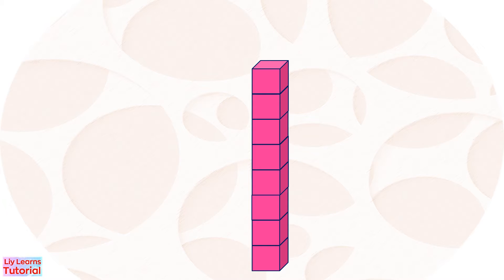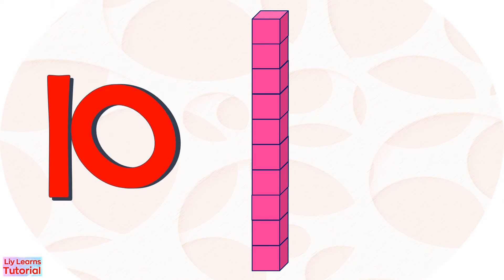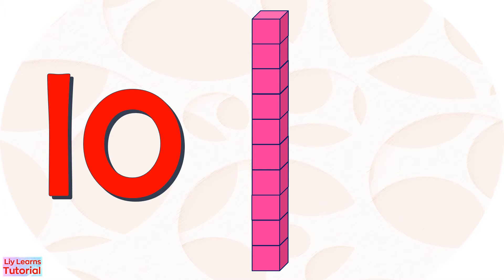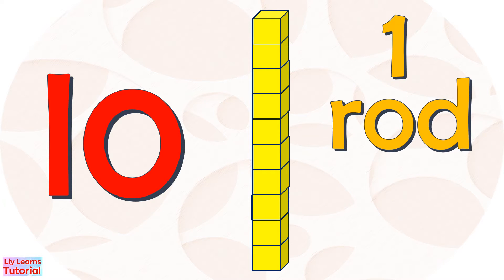Let's count the blocks: 1, 2, 3, 4, 5, 6, 7, 8, 9, 10. There are 10 blocks. We can also say this is one rod. When we count by tens, we say 10 for one rod because each rod is equal to 10 units or 10 blocks.